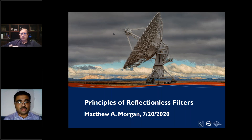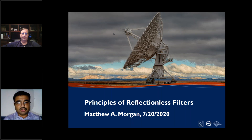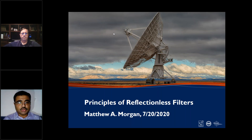A little about the speaker: Dr. Matthew Morgan received his BS in electrical engineering from the University of Virginia in 1999, and his MS and PhD in electrical engineering from the California Institute of Technology in 2001 and 2003 respectively. Dr. Morgan began his career at NASA's Jet Propulsion Laboratory in Pasadena, CA, where he conducted research in the development of monolithic millimeter-wave integrated circuits and MMIC-based receiver components for atmospheric radiometers, laboratory instrumentation, and deep space communications. He is now a tenured scientist at the National Radio Astronomy Observatory's Central Development Lab.